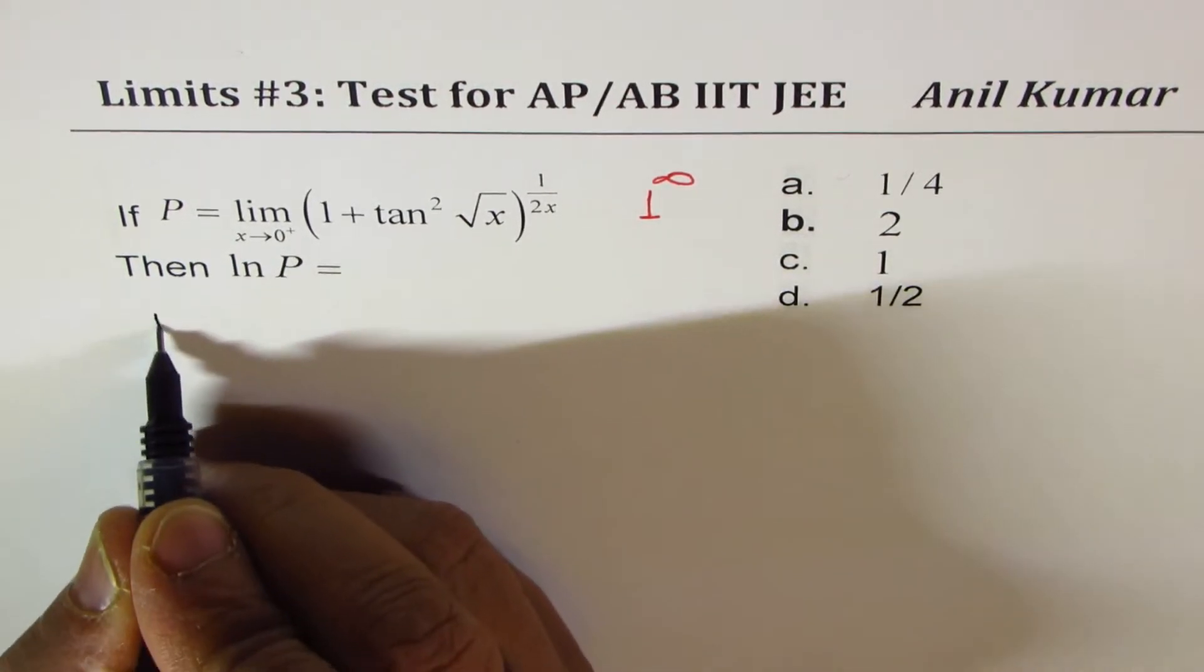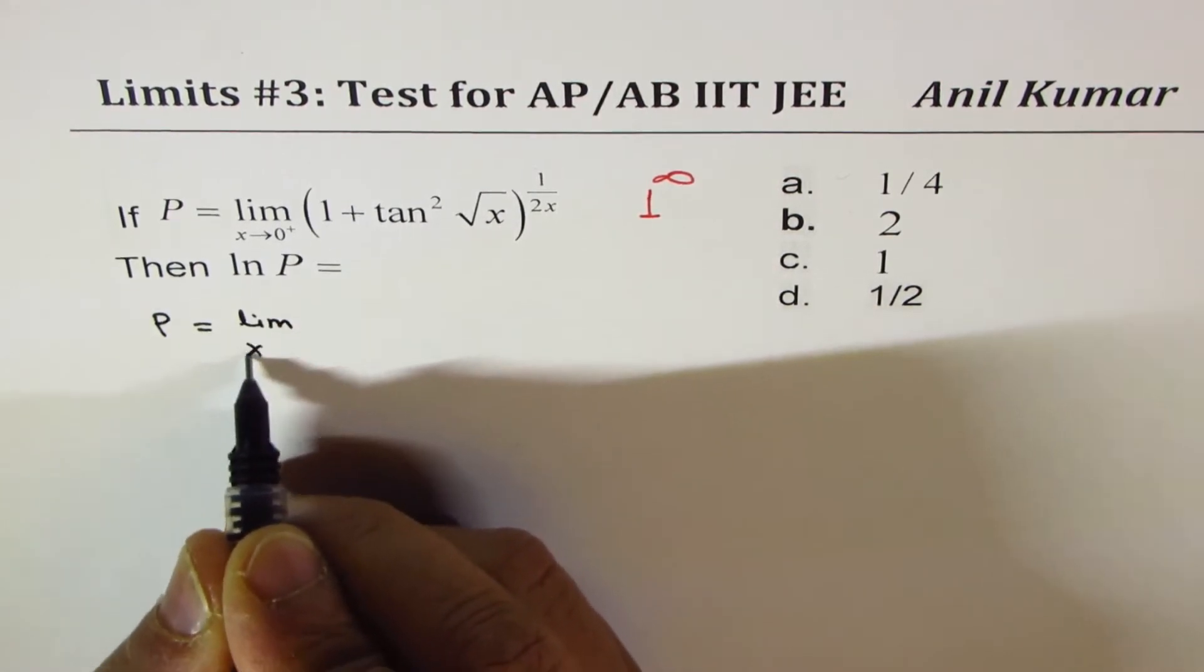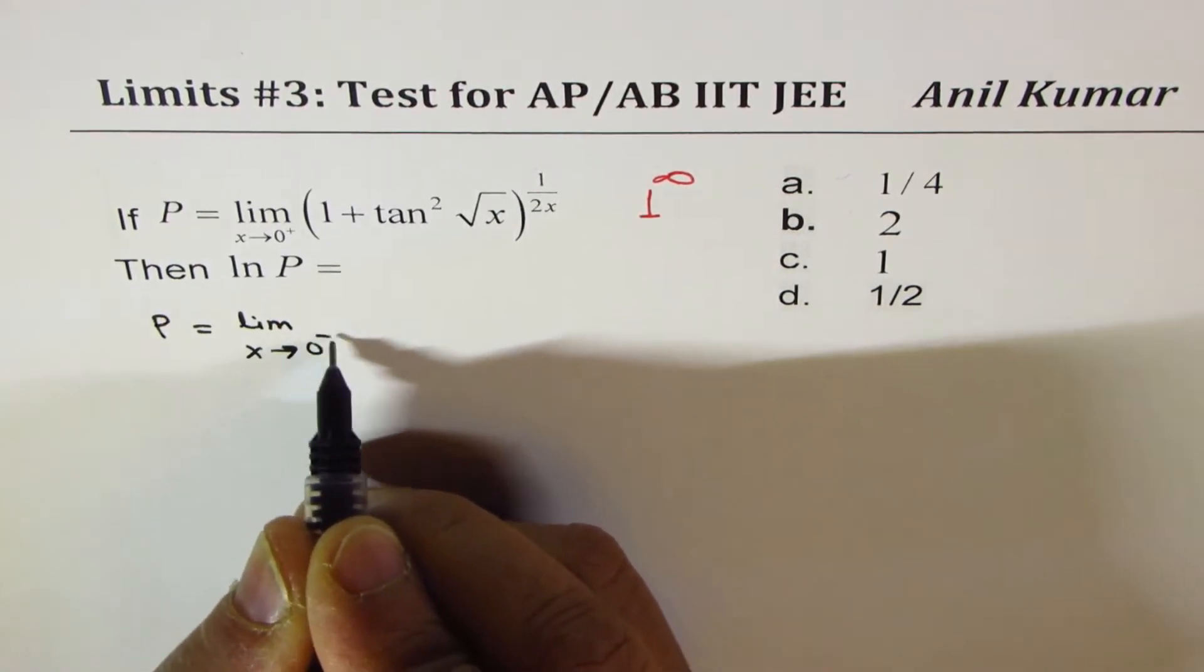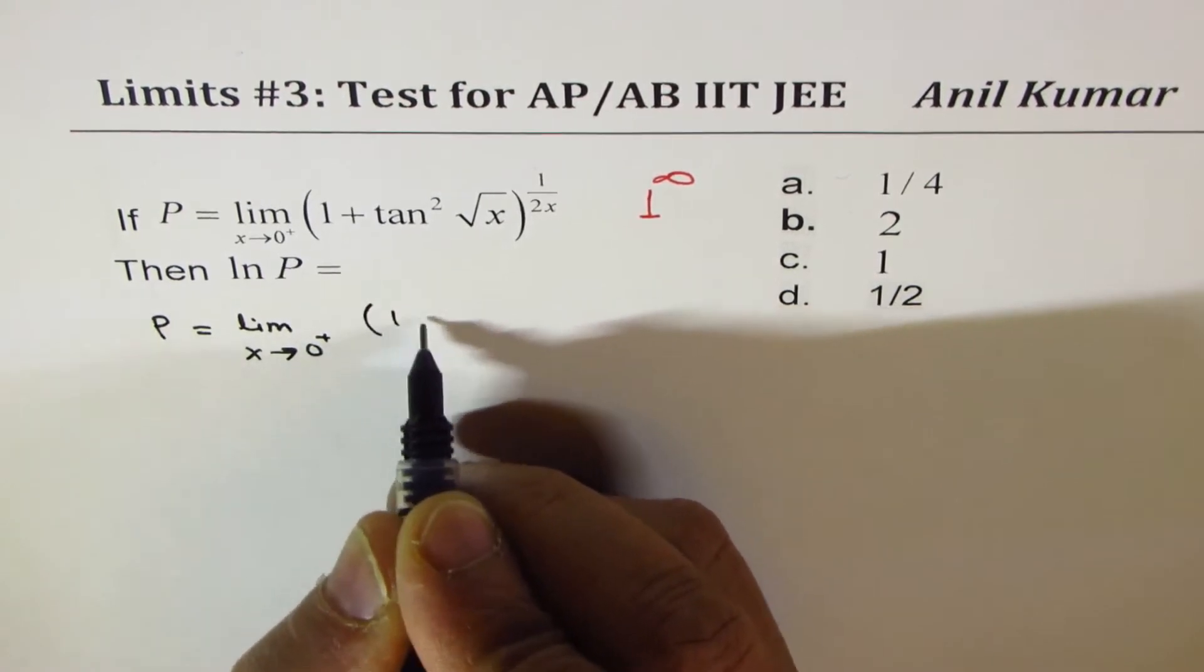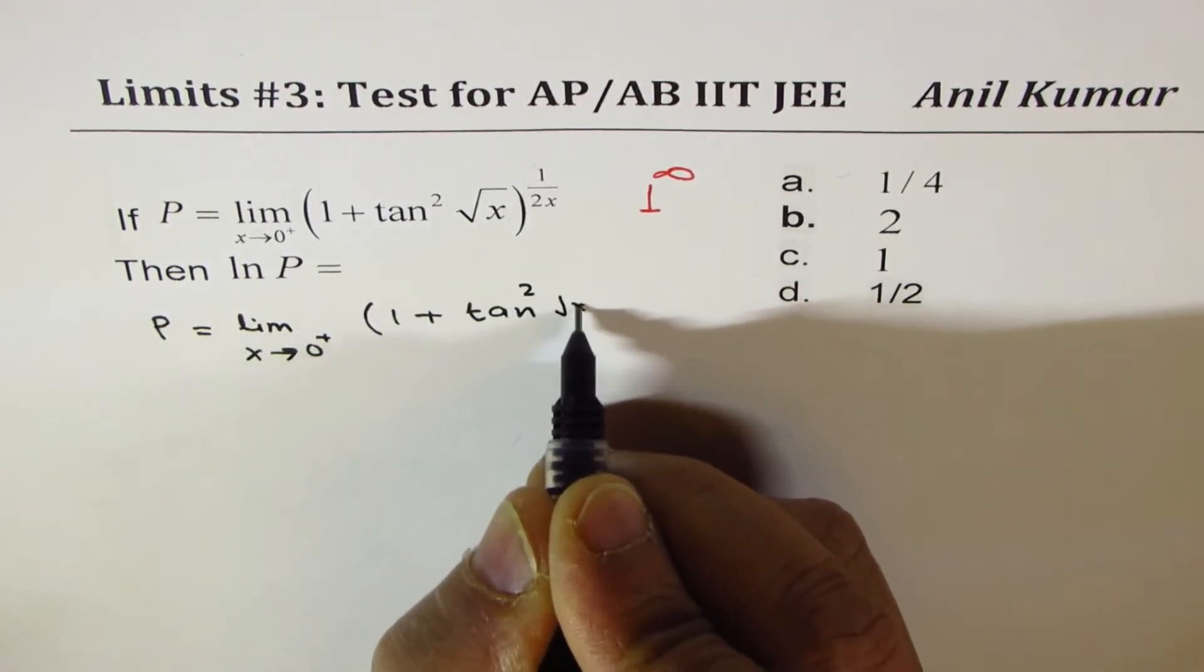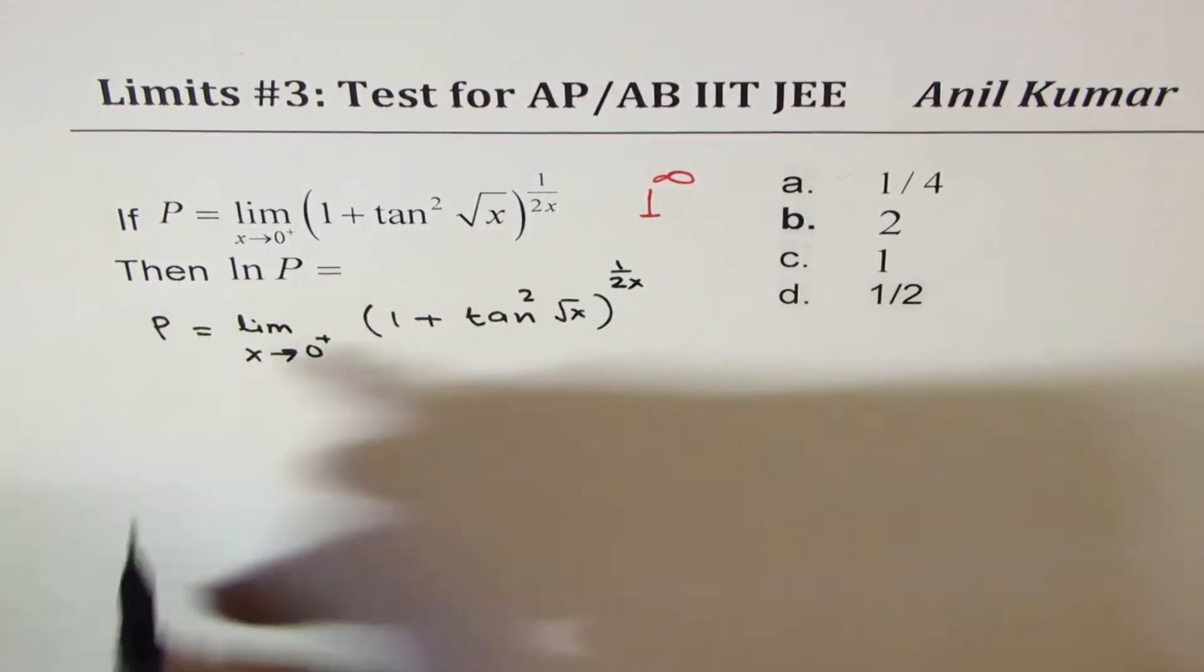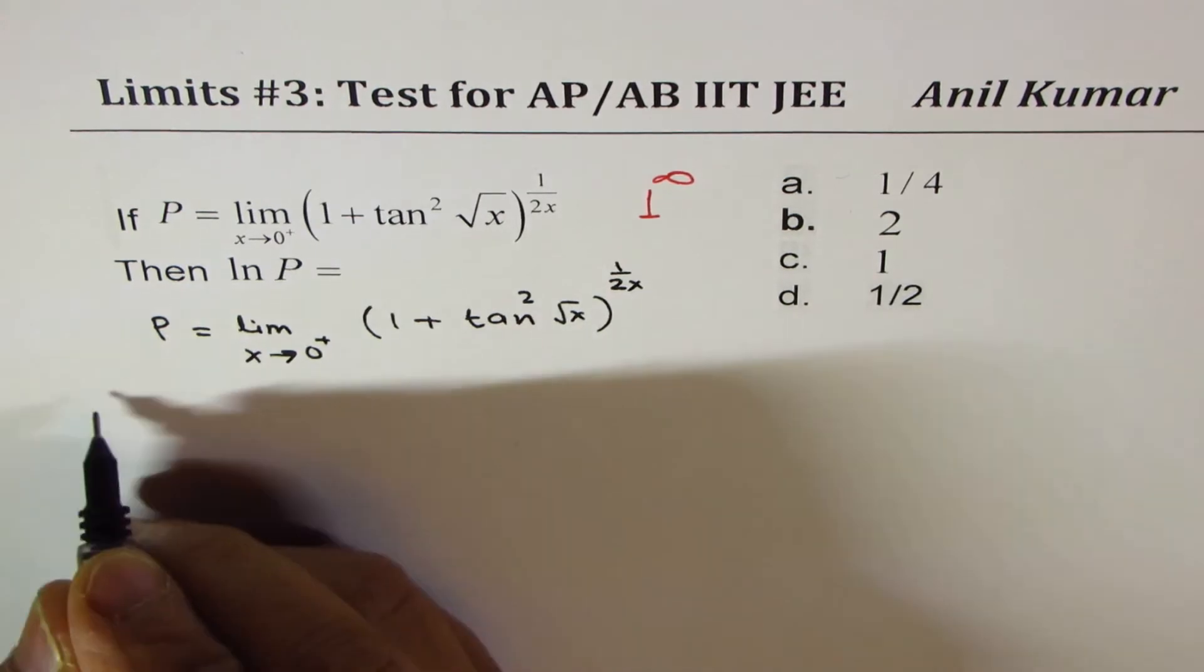So let's begin by copying the question as P equals to limit x approaches 0 from the right side, and the expression is (1 + tan²√x)^(1/2x).